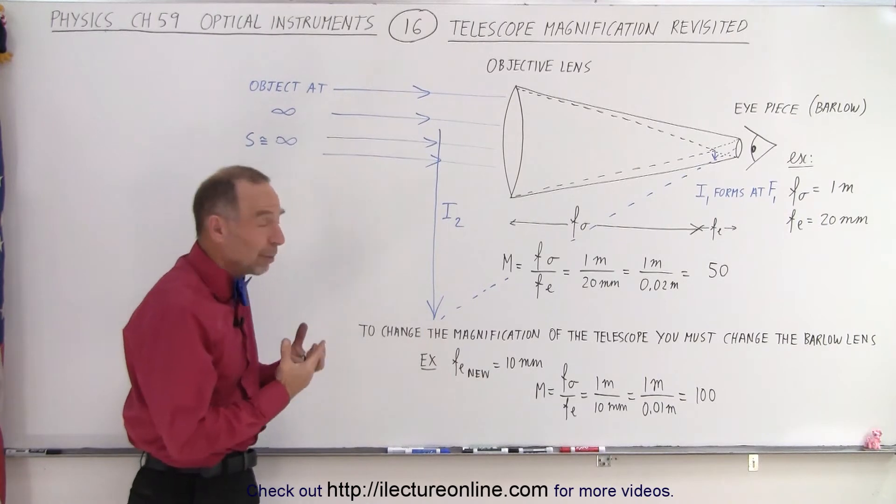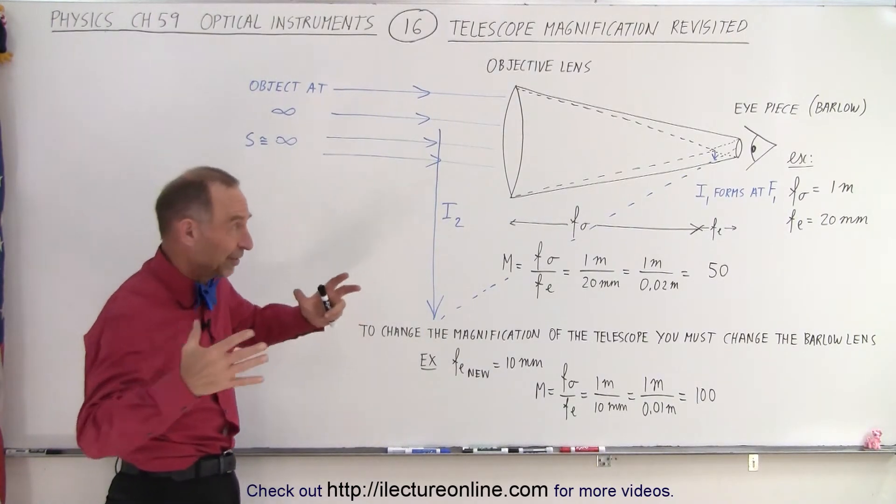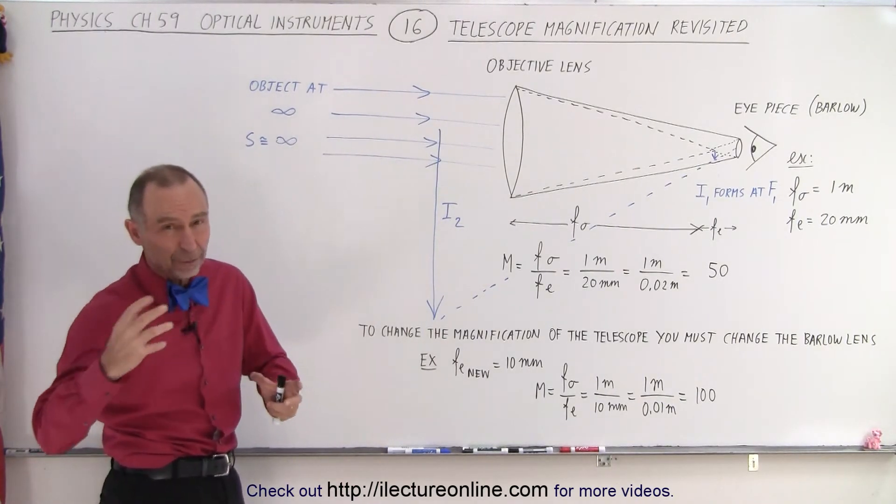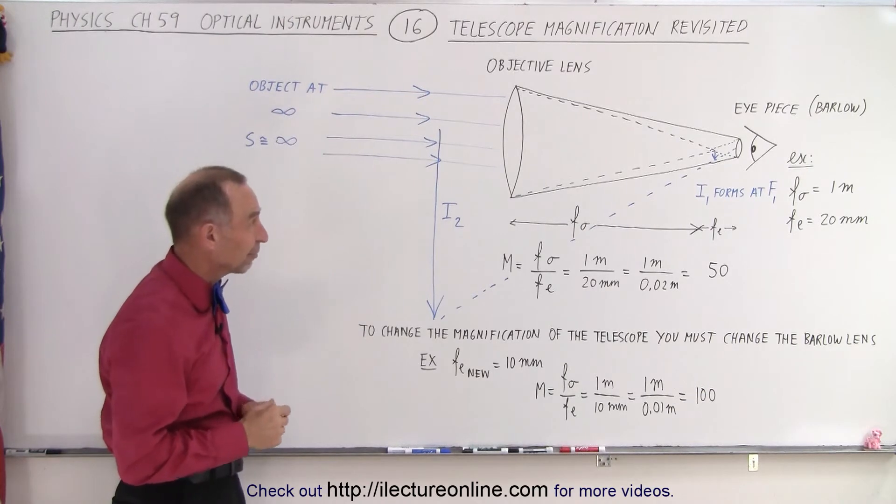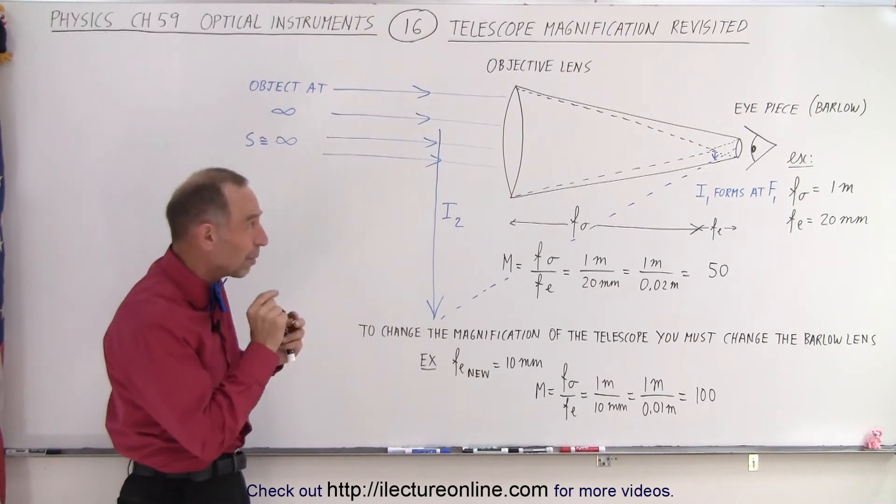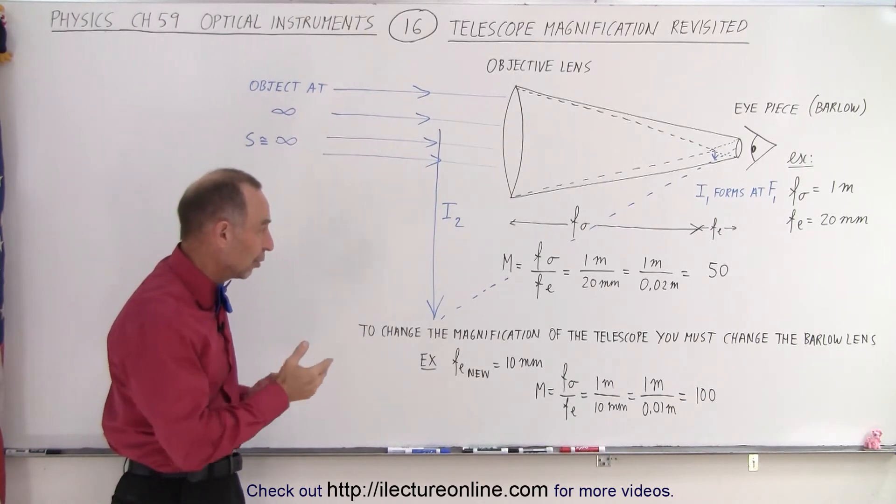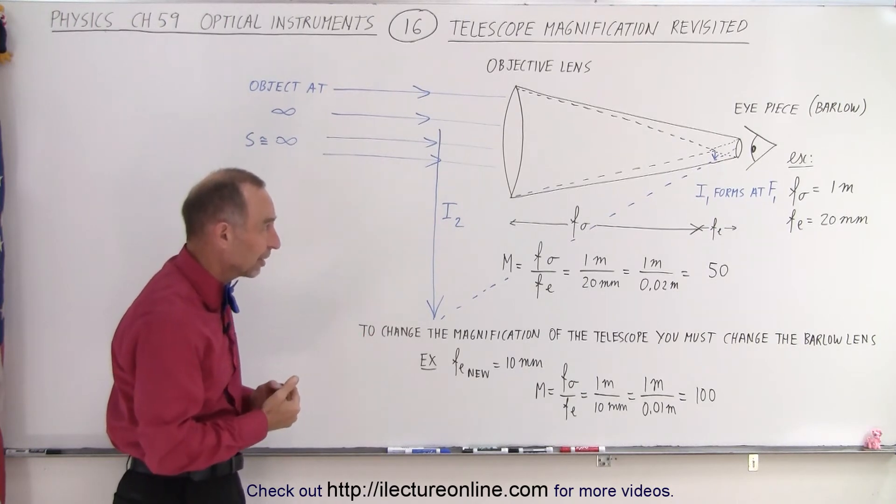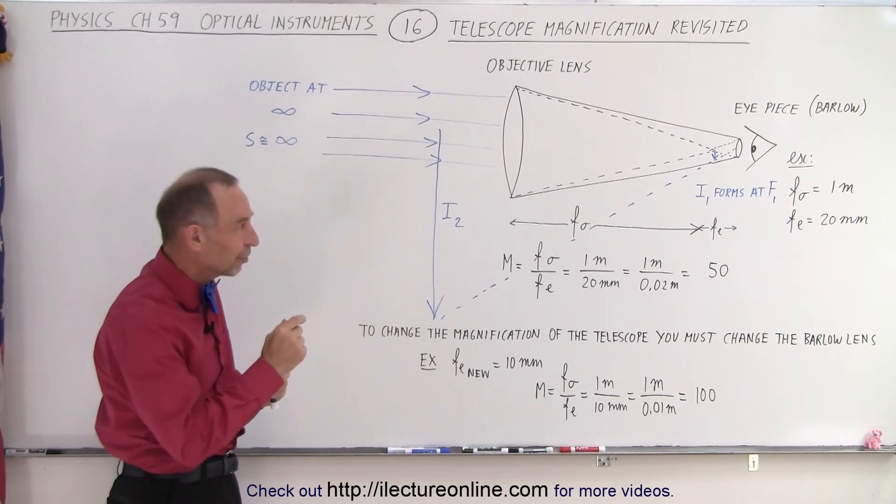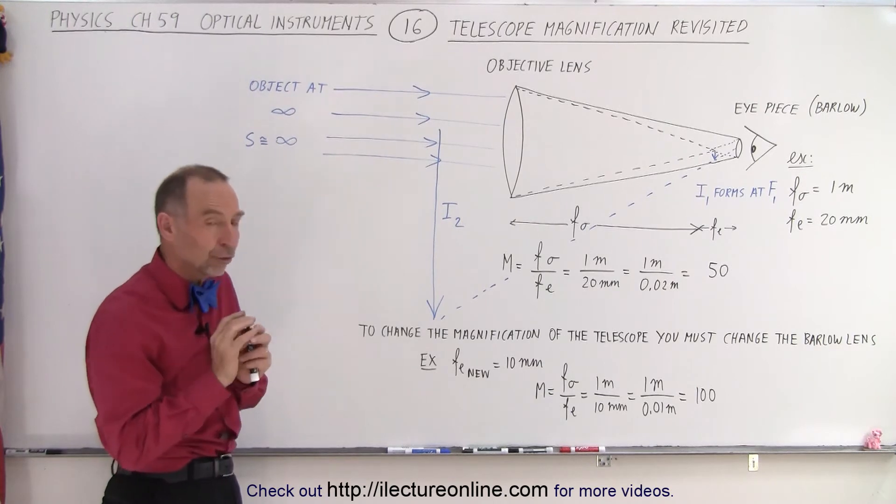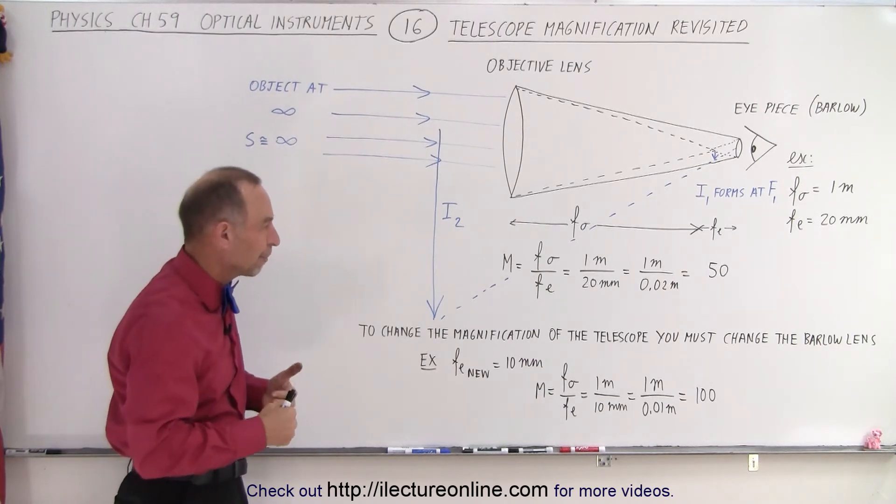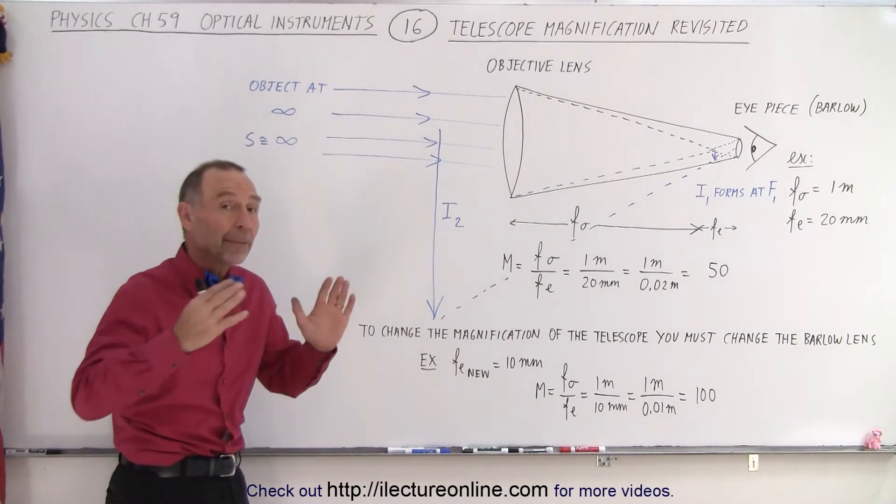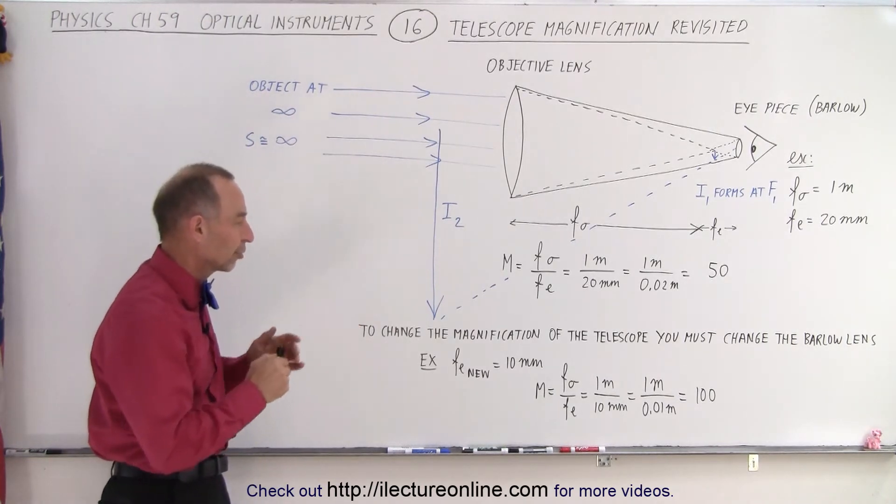With telescopes, you can't do much about the focal length of the objective. That is fixed. You can't change it. You typically don't exchange the objective. But you can change the Barlow lens, the eyepiece. And so in order to change the magnification of the telescope, you tend to interchange different focal length Barlow lenses to get the proper magnification. We'll get into what the proper magnification of a telescope is later.